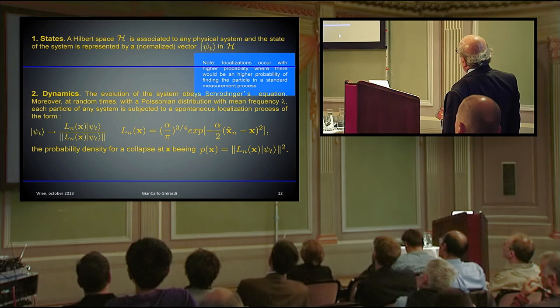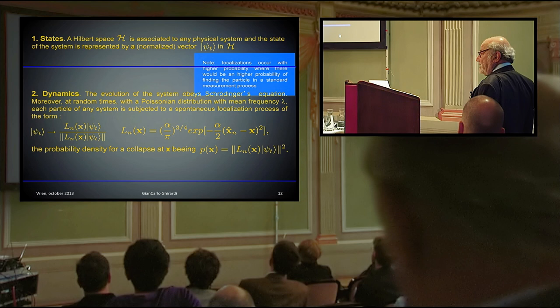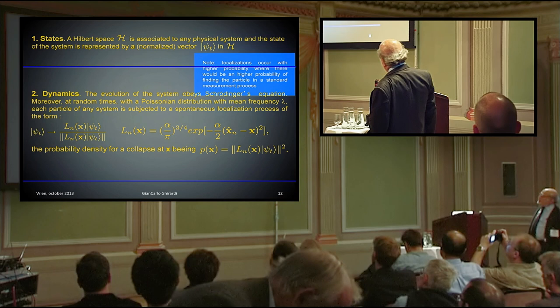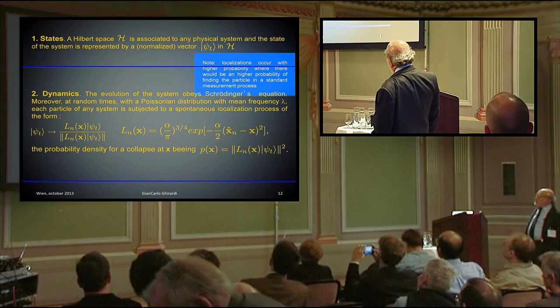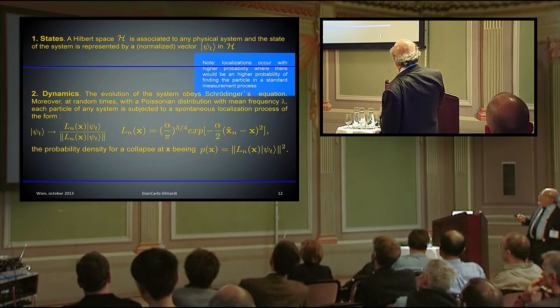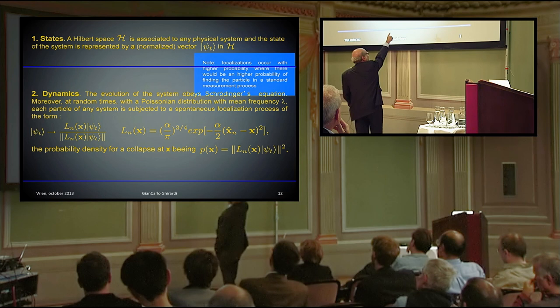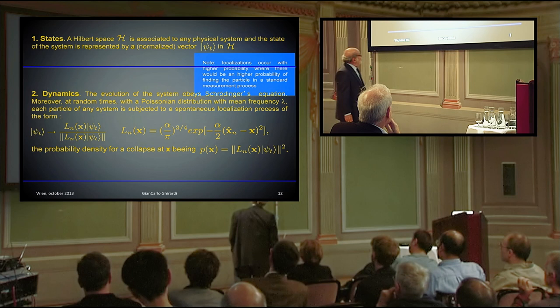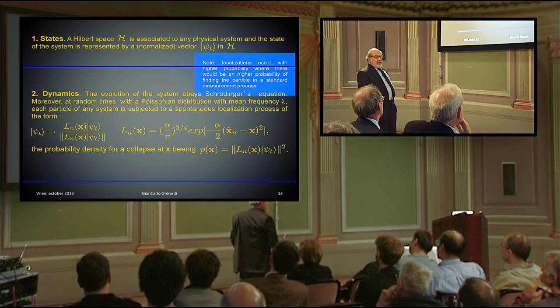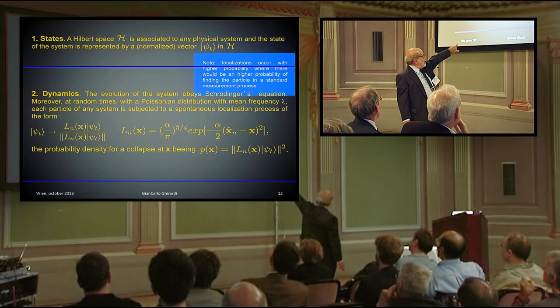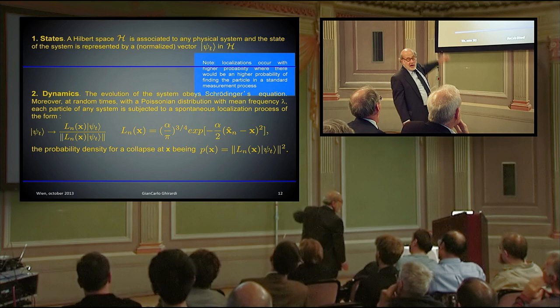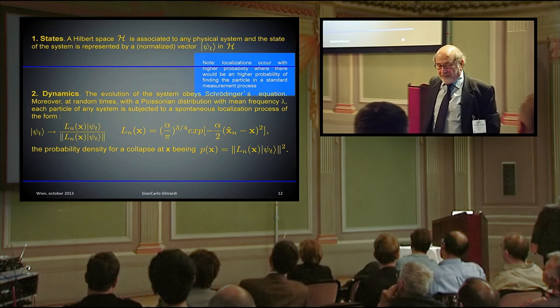For what concerns the evolution, the evolution of the system obeys Schrodinger equation. Moreover, there is this stochastic and random and non-linear process. So at random time with the Poisson distribution, with mean frequency lambda, each particle of any system, you see here I have the n particle suffer a localization. x_n^hat is the position operator of the n particle, x is the position, and so you multiply the wave function times this operator l_n. If it suffers a localization, you normalize the vector, and you assume that the probability density for a localization occurring at x is given by the norm of the state that you get when you apply the localizing wave function to the wave function of your system.